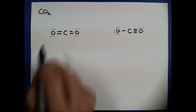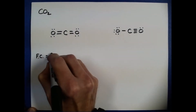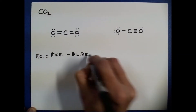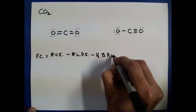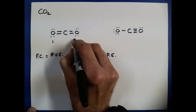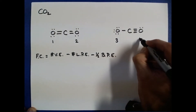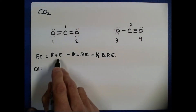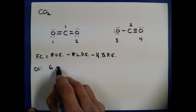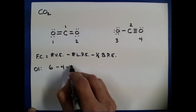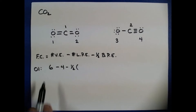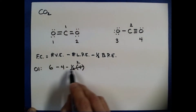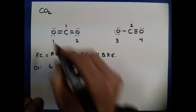Let's calculate the formal charge for oxygen one. Formal charge equals the number of valence electrons minus the number of lone pair electrons minus half the number of bond pair electrons. Oxygen has six valence electrons. The number of lone pair electrons is four, and we subtract half the number of bond pair electrons — each bond has two electrons, so four bond pair electrons, and half of four is two. Six minus four minus two equals zero, so the formal charge on this particular oxygen is zero.